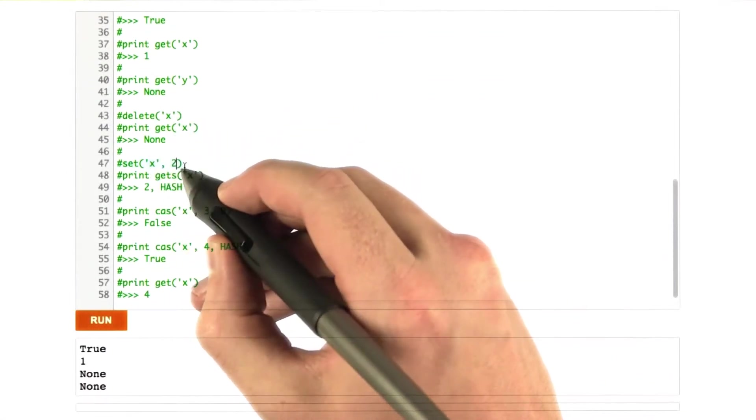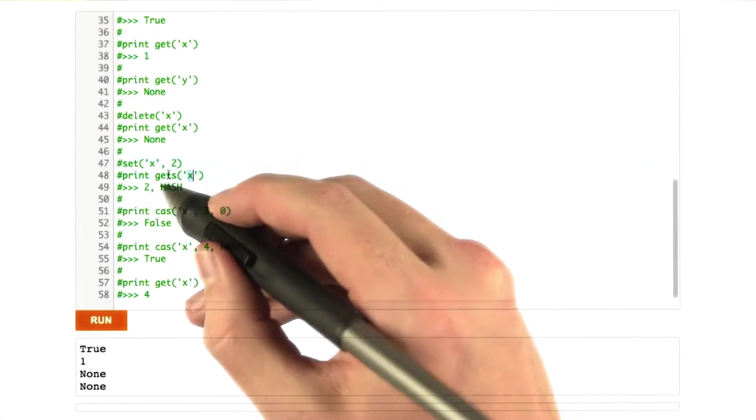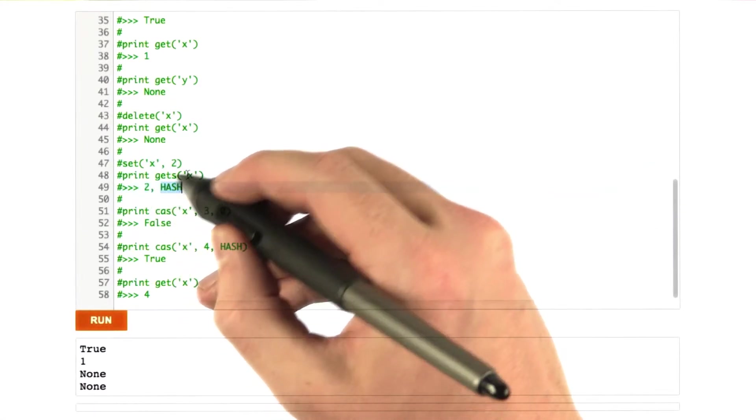So here's setting x to 2, and then we print gets x. And this is going to print 2 and then a hash. It's not going to print the word hash. It's going to print a number.